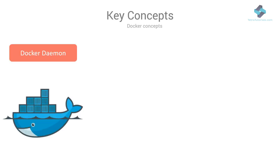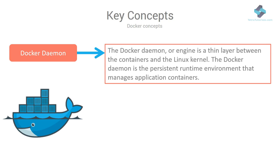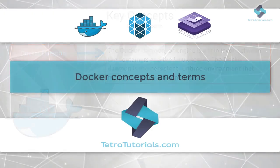The Docker daemon, also known as the Docker engine, is a thin layer between the containers and the Linux kernel. It is a persistent runtime environment that manages application containers. Any Docker container can run on any server that is Docker daemon enabled, regardless of the underlying operating system.